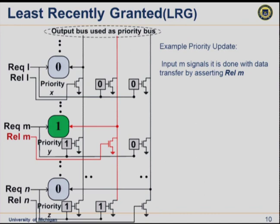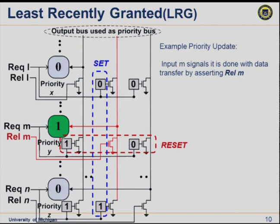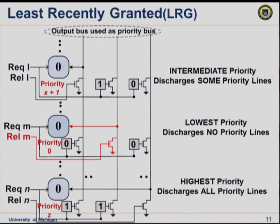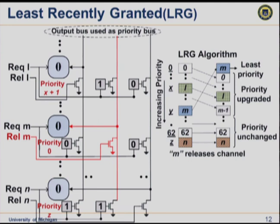To update priorities: the most recently granted output — request M — has its bit vector reset, indicating lowest priority over anyone. We then set all the bits along its column that it's sensing. This guarantees that anyone who had lower priority and had a zero there now has a one, inhibiting it. Anyone who already had a one keeps their priority. After this update, request M moves to lowest priority, request L moves to intermediate, and request N stays at highest priority as the least recently granted.